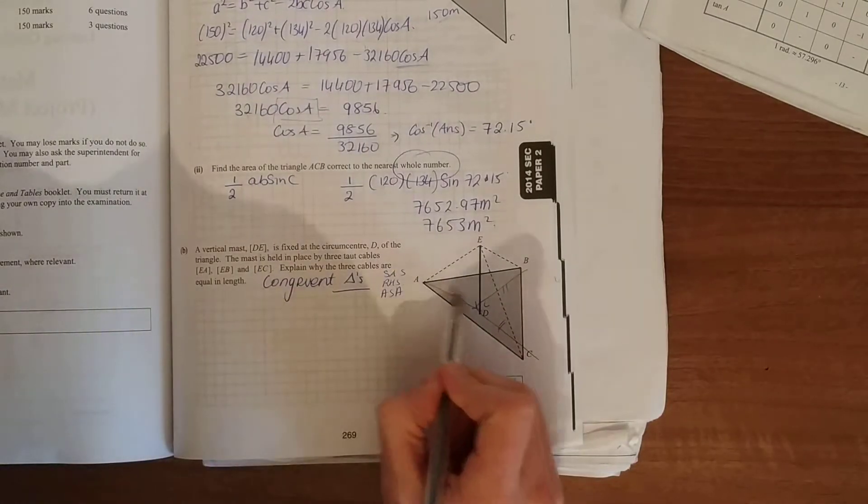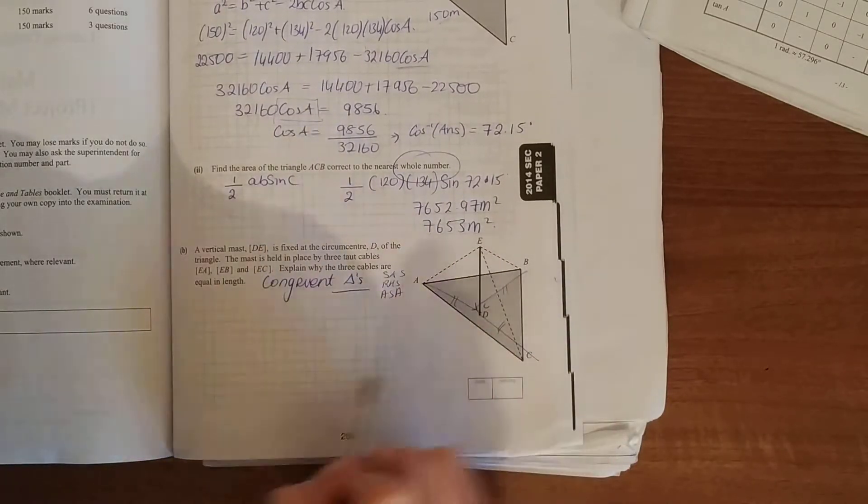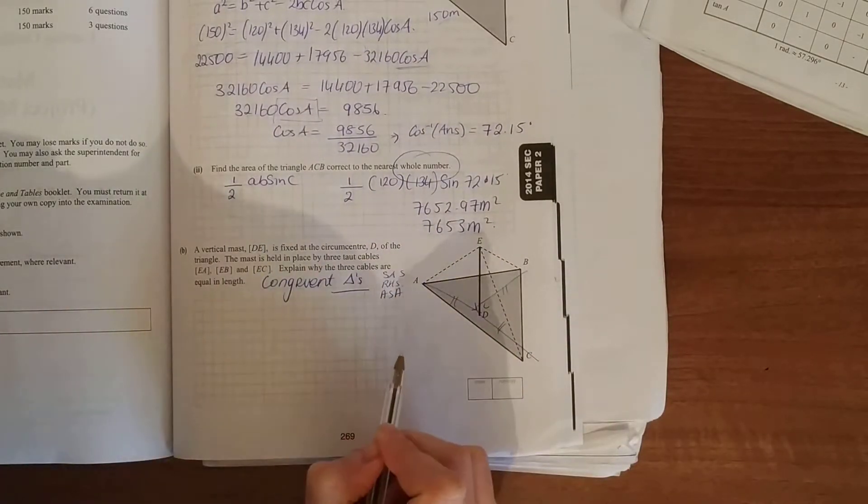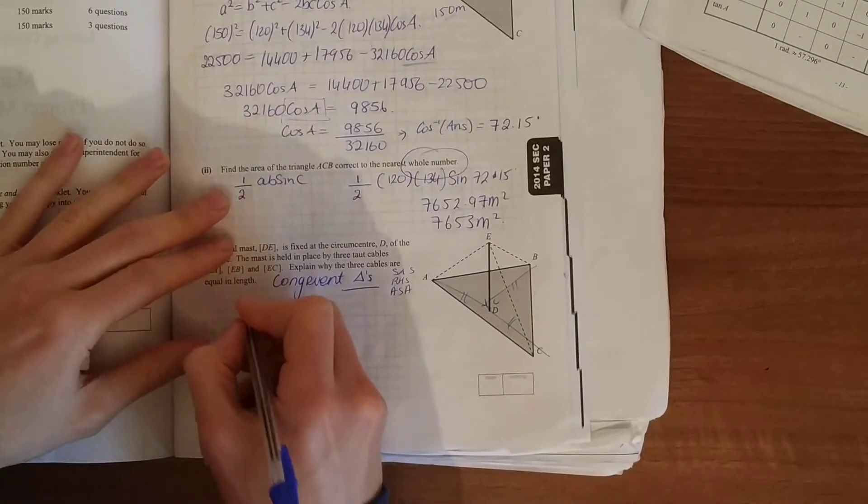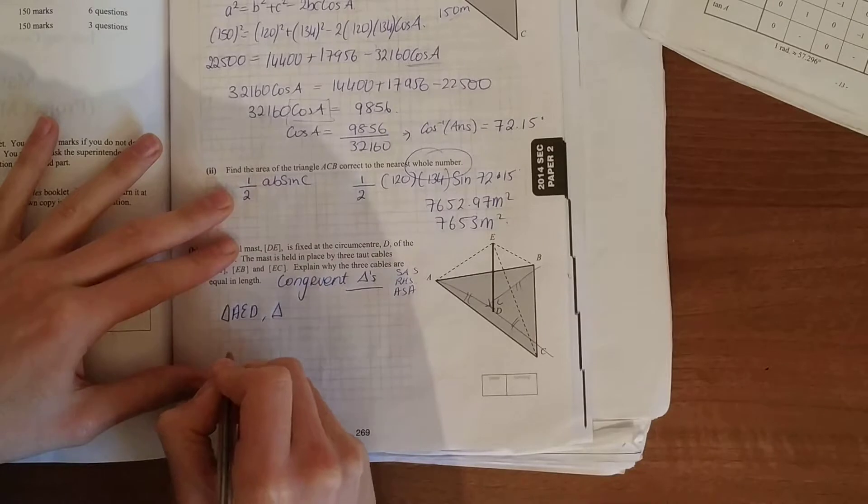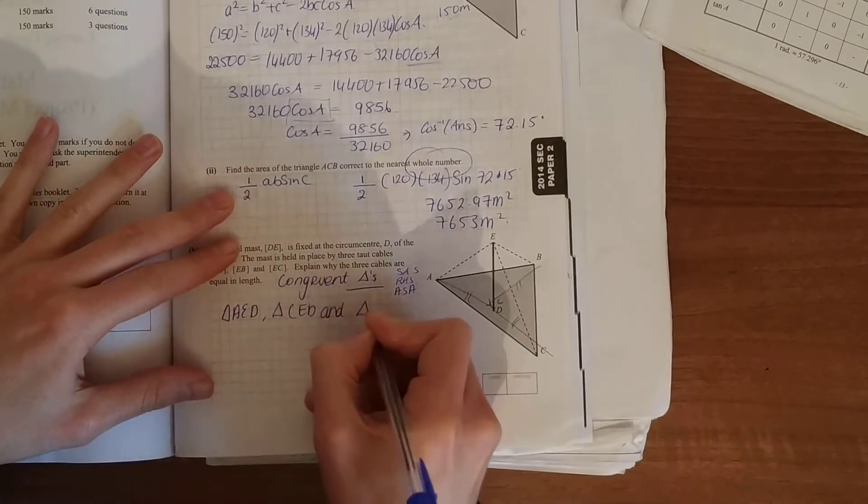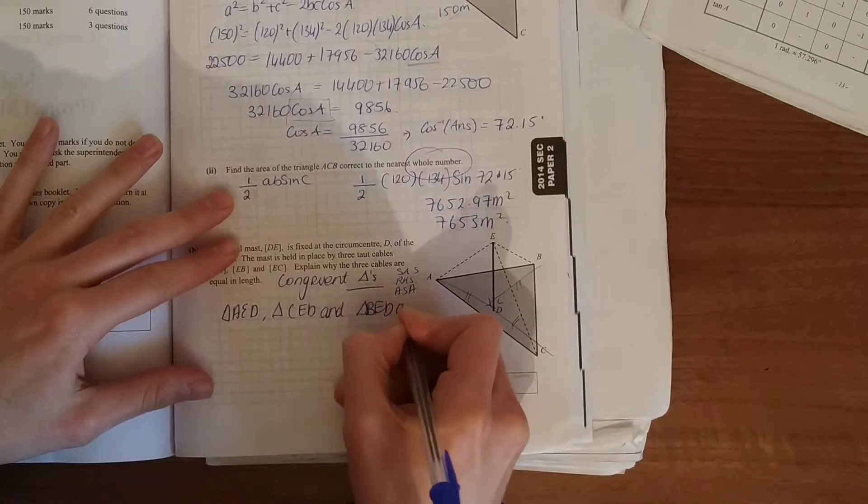So here, you take out your three triangles: ADE, EDB, EDC. So triangles AED, CED, and BED are congruent.